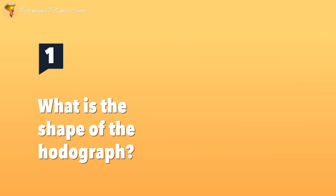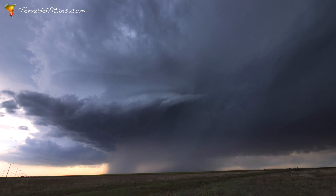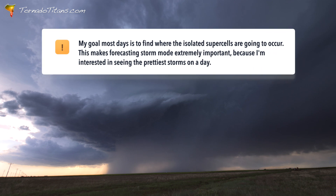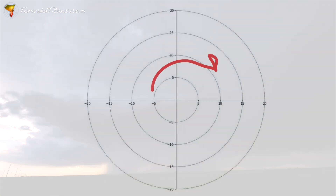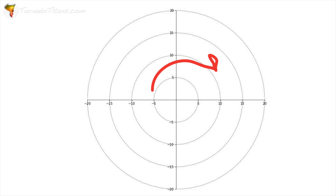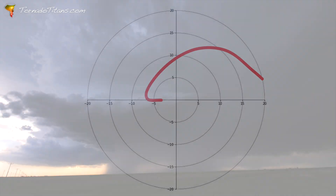The first thing I'm looking for when trying to determine storm mode is the hodograph shape. Does the wind shear actually support supercells? When I am storm chasing, I am looking for supercells — most specifically isolated supercells. A supercell hodograph looks something like this: curvature in the low levels, good veering aloft — that's what you're looking for. There is so much more to hodographs, and there's a card coming up that will tell you a lot more about what hodograph shapes lead to what.